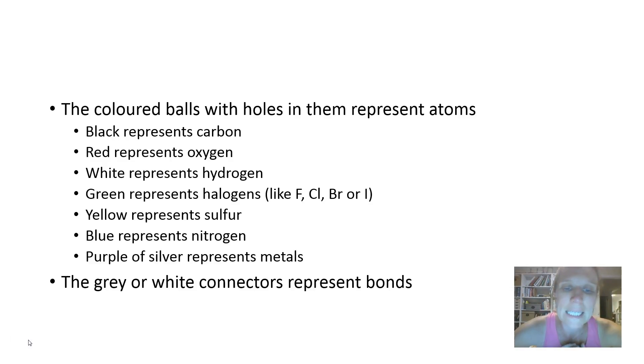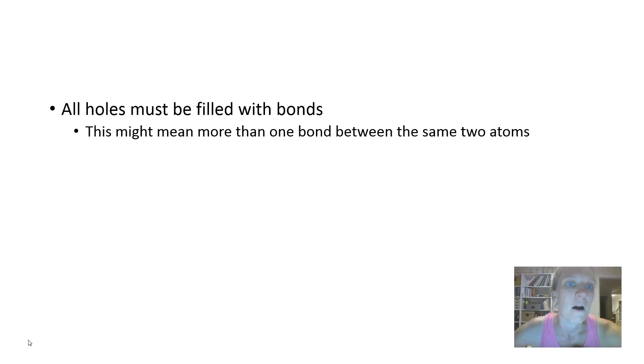The grey or white connectors represent the bonds between atoms that make the molecule. Couple of simple rules: all the holes must be filled with bonds, and this might mean that more than one bond occurs between the same two atoms. Also, all the bonds have to be connected to an atom on each end. You can't have the bonds just waving around in space not connected to anything.